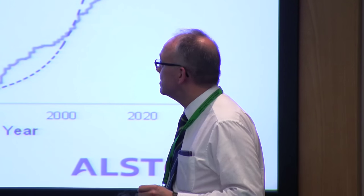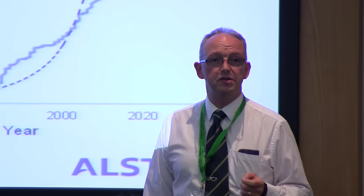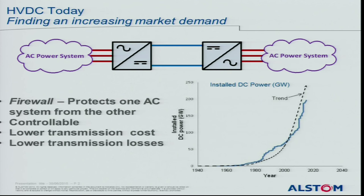That comes into controllability as well — lower transmission costs and lower transmission losses per kilometer. DC is a cheaper way of transmitting than AC.